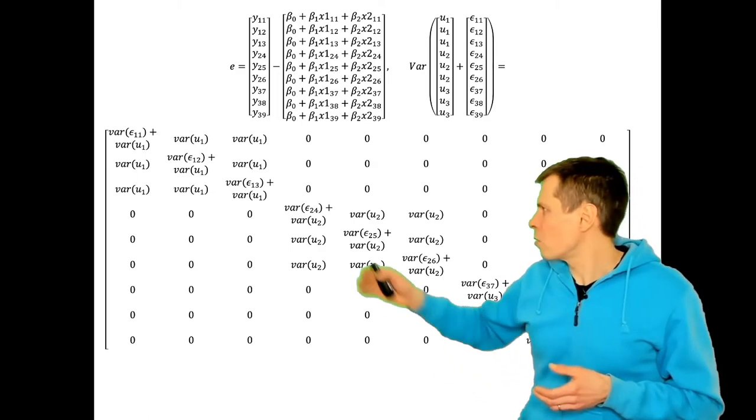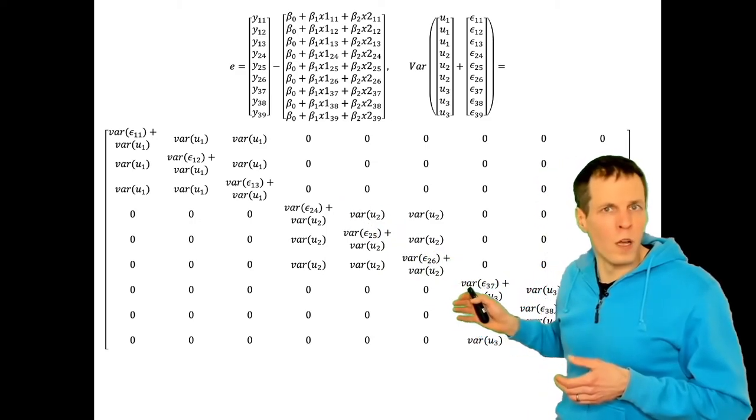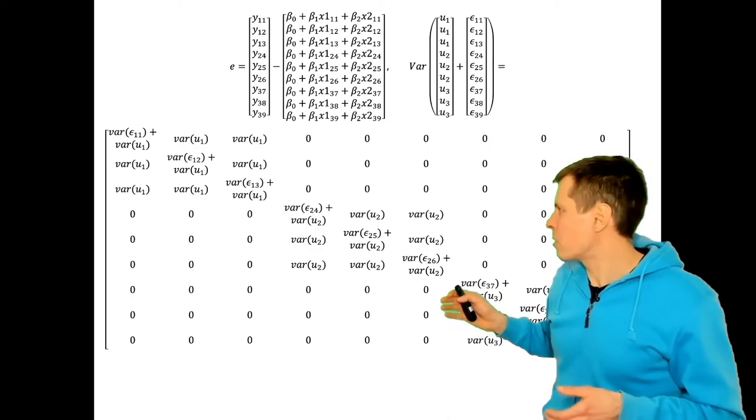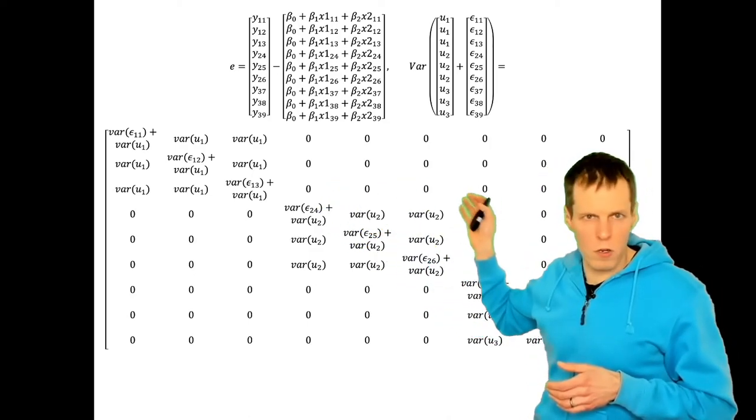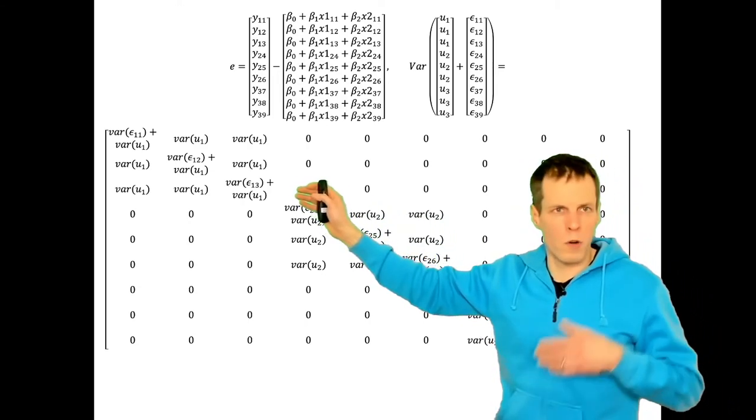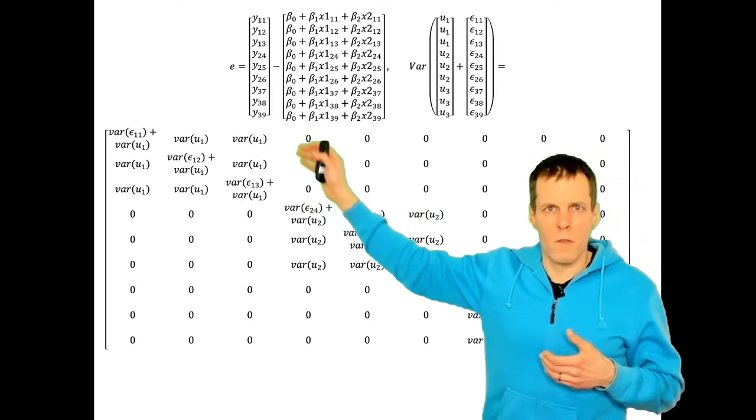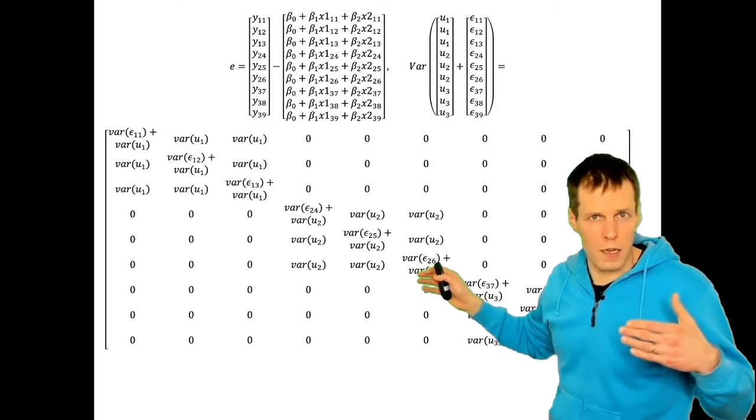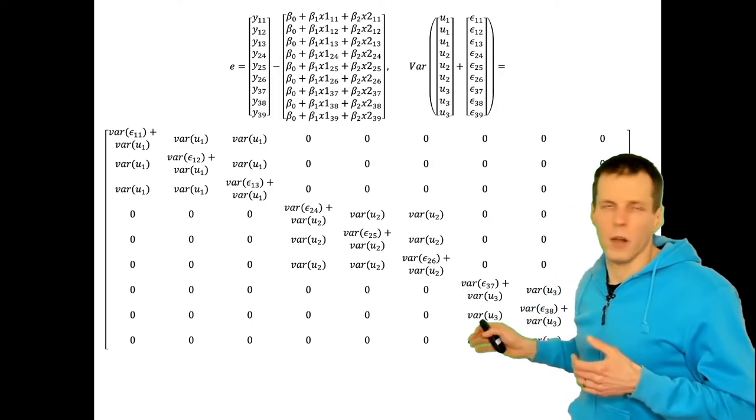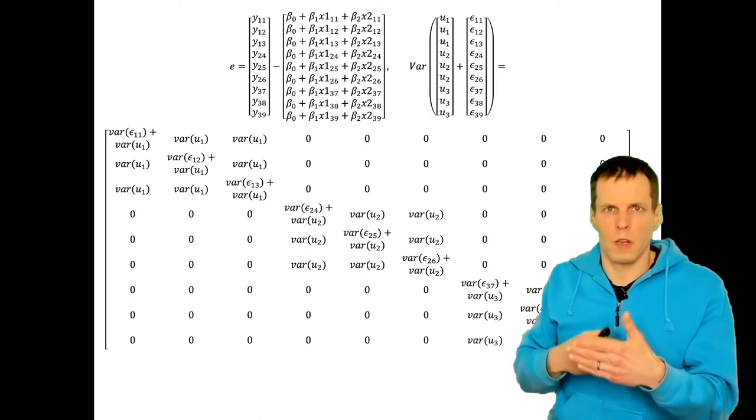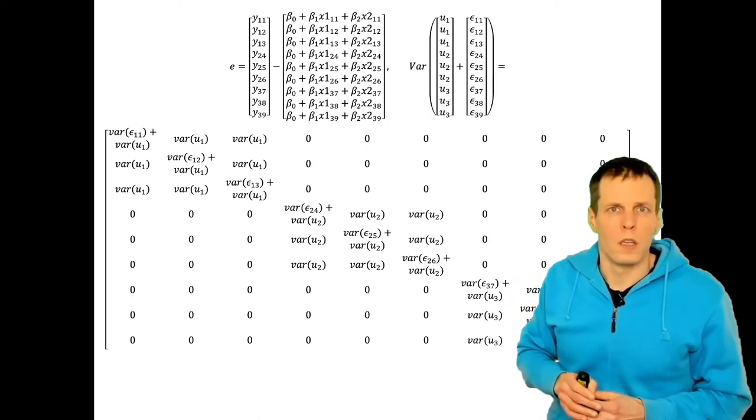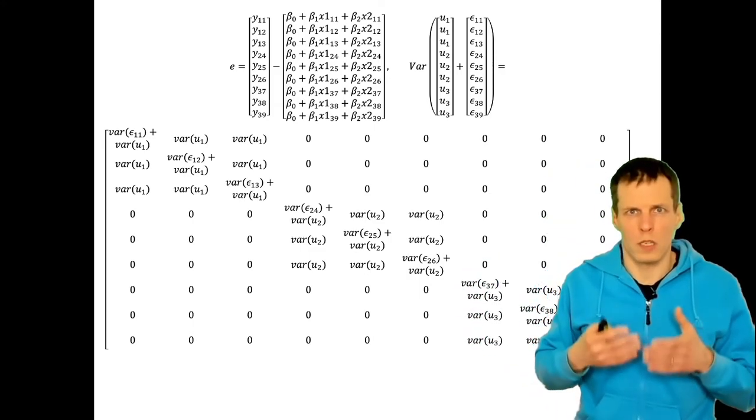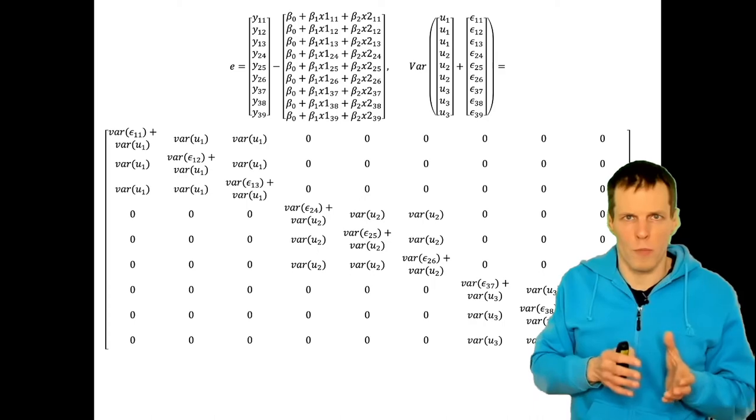In practice, we don't take the full residual vector and compare it against the full error covariance matrix, but we work one cluster at a time because these clusters are independent. They don't correlate the error terms. We can just calculate the likelihood of the first three residuals from this three by three sub-matrix. Then we calculate the log likelihood of the second cluster and the third cluster. We take the sum of the log likelihoods and that's our full likelihood. The reason why we work with sub-matrices instead of this full matrix is computational. It's a lot simpler to work with smaller matrices, a lot faster.